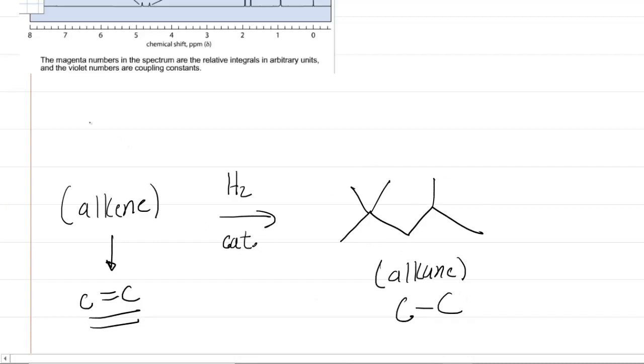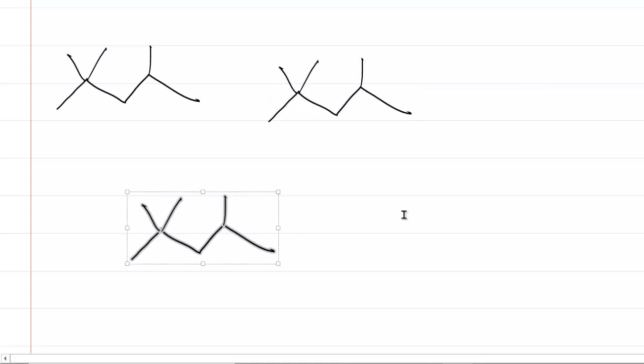So what this all means is that our unknown structure is an alkene, and we simply have to figure out where the double bond is going to be located. So let's take the product, which provides us with the basic skeletal framework of our unknown structure. Let's paste it in here a few times. And let's understand that somewhere in here is a double bond. Now, we can't just put it anywhere.